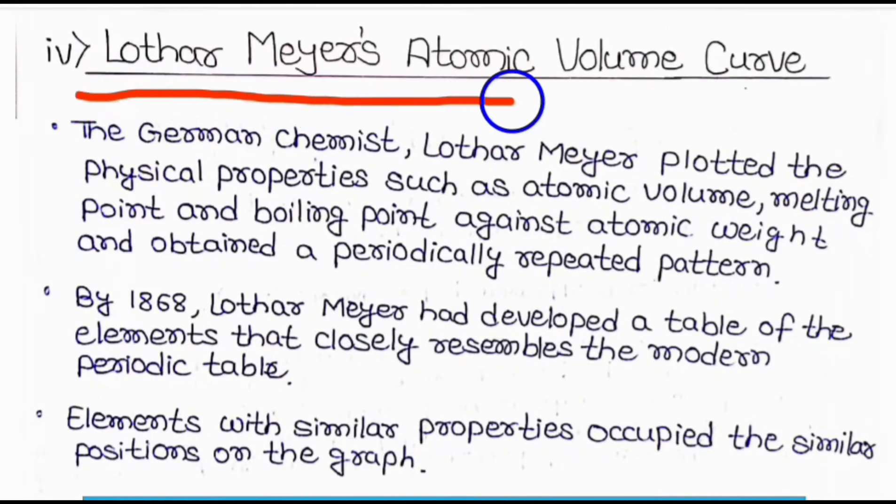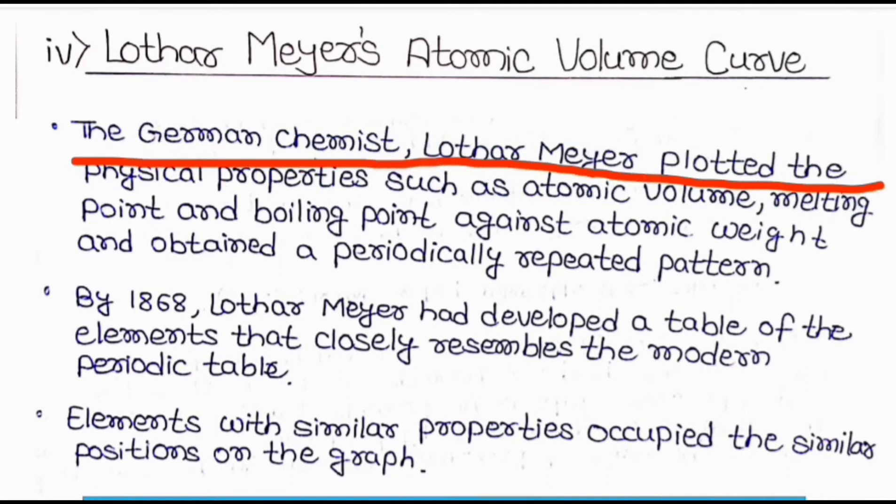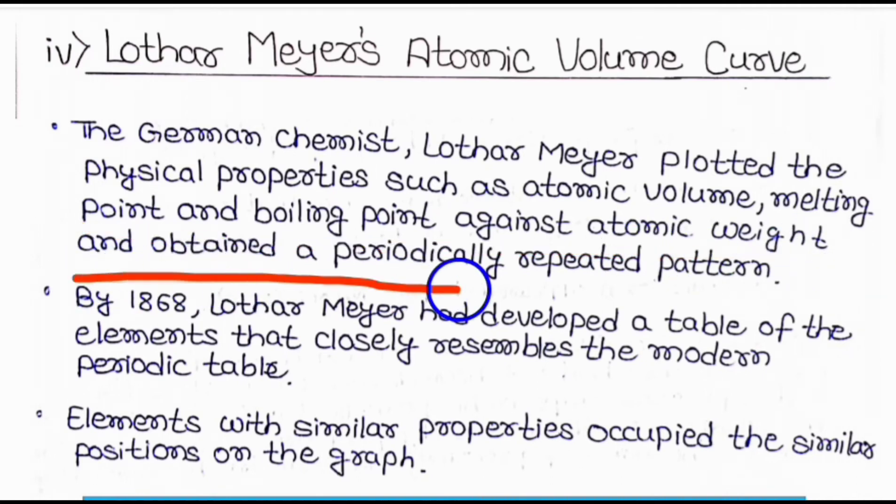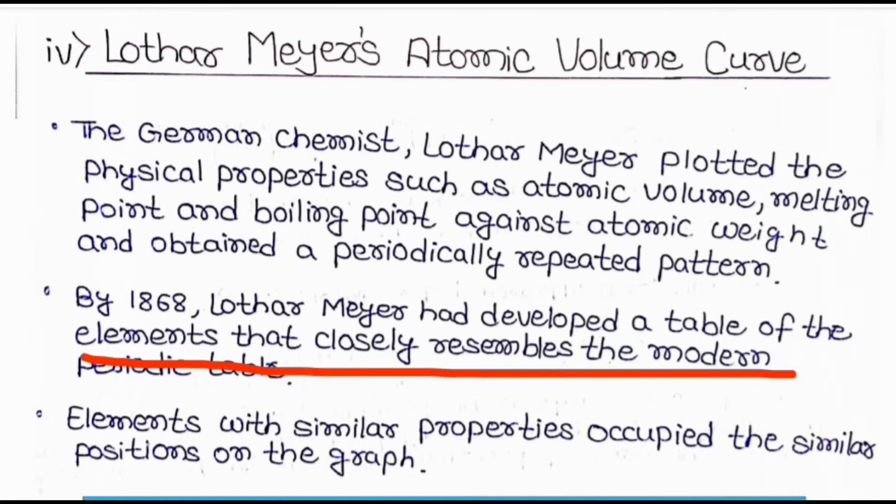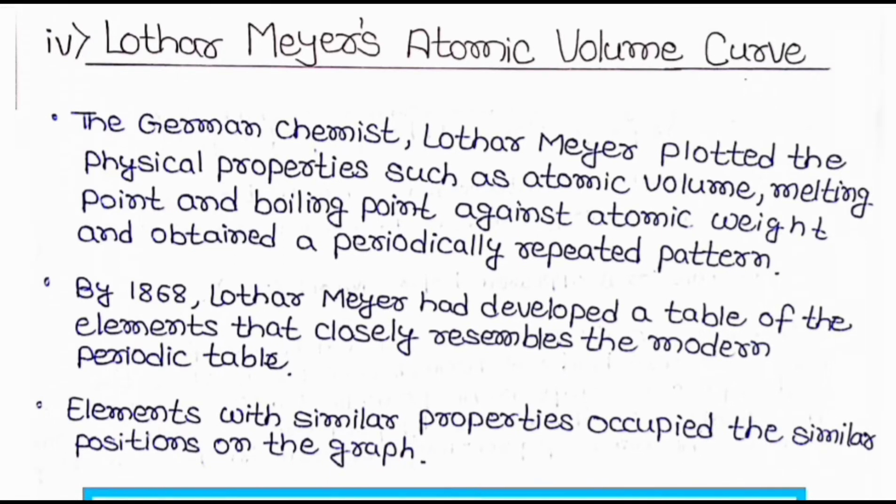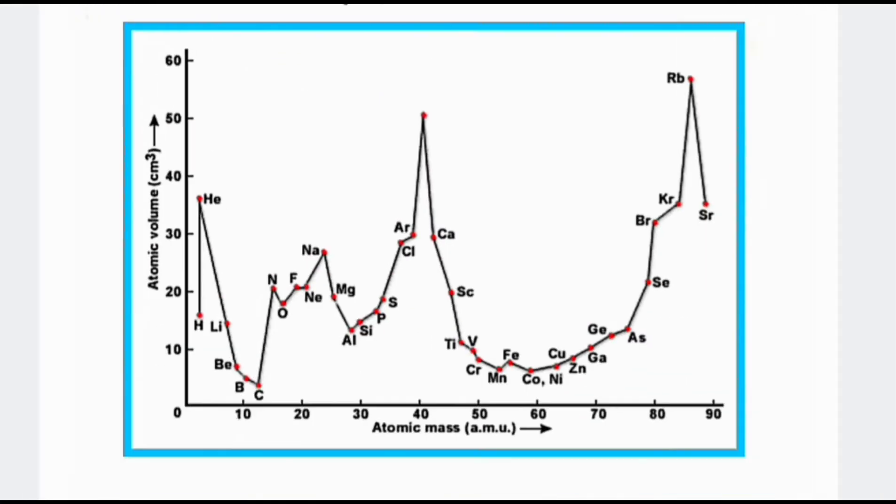Now let us come to Lothar Meyer Atomic Volume Curve. The German chemist Lothar Meyer plotted the graph of physical properties such as atomic volume melting point and boiling point against the atomic weight and obtained the periodically repeated pattern. By 1868 Lothar Meyer had developed a table of elements that closely resembles the modern periodic table. The elements with similar property occupied the similar position on the graph. And the graph of Lothar Meyer was like this graph and this graph consisted of atomic volume versus atomic mass.